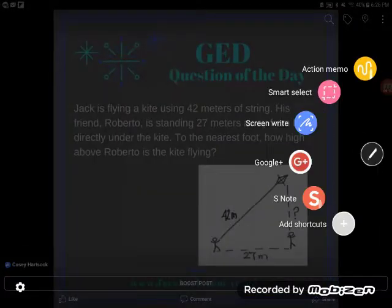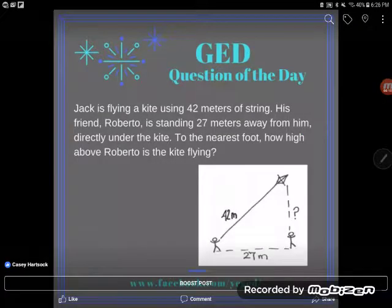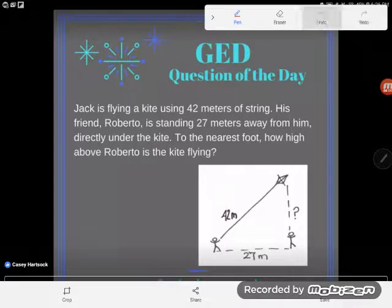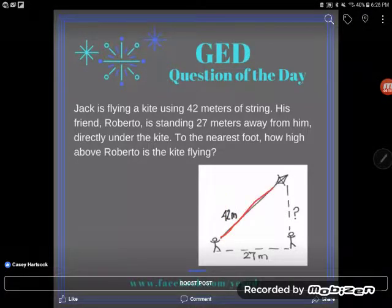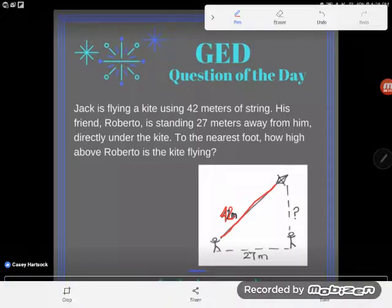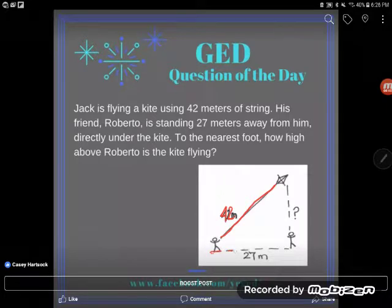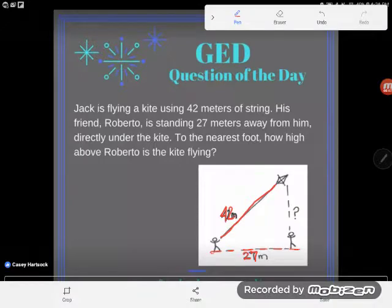So we can see that the string of the kite here is labeled 42. So my string of my kite here is 42. His friend Roberto is standing 27 meters away from him and again they labeled that for us, 27 meters.